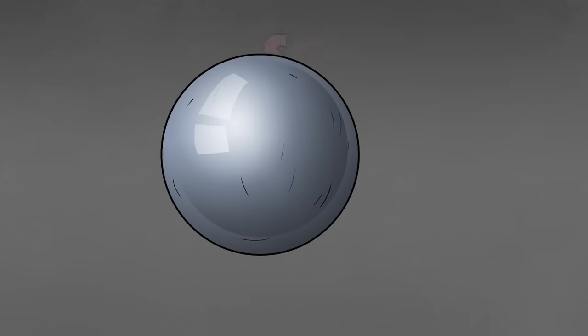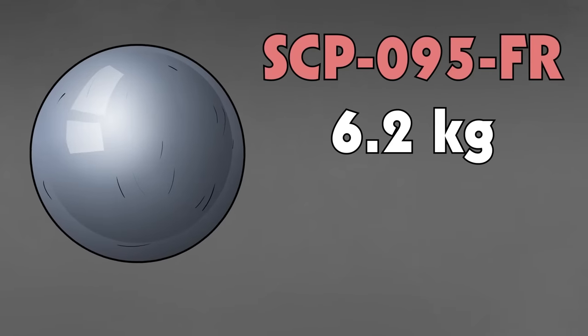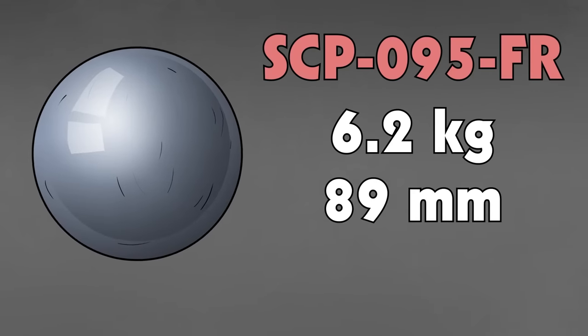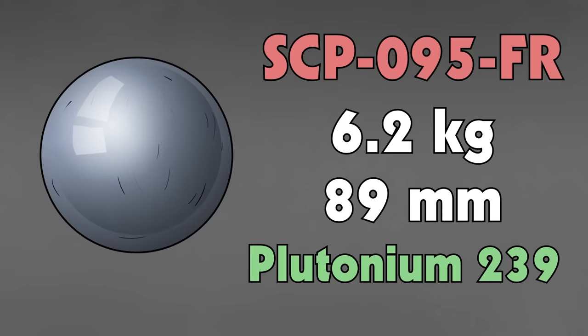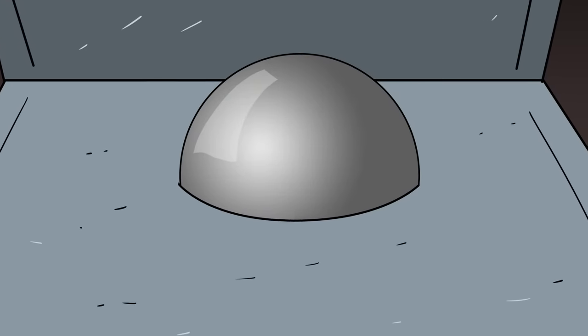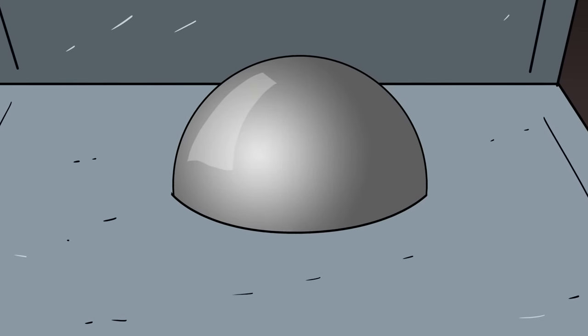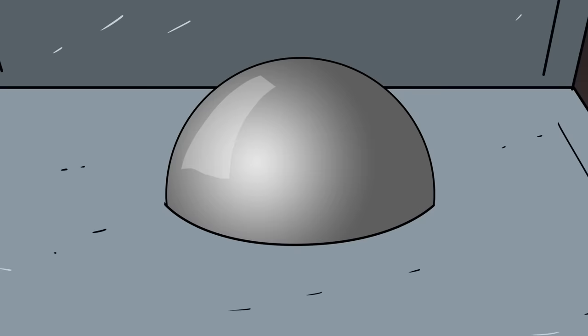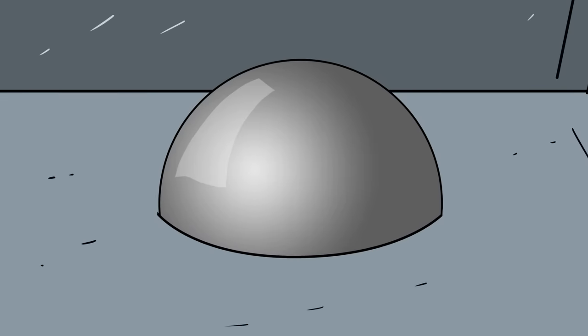SCP-095-FR is a 6.2 kilogram sphere, 89 millimeters in diameter, that is composed entirely of plutonium-239. Despite at one point seeming to be a normal sphere of the plutonium isotope, SCP-095-FR now seems to be in a permanent, self-sustaining state of criticality.